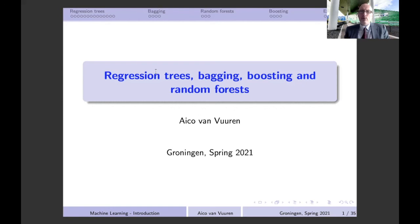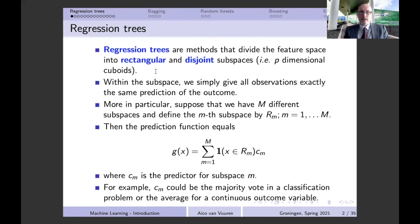These methods can make regression trees one of the most powerful prediction methods. Regression trees are methods that define the feature space — the total support of our features — into rectangular and disjoint subspaces, usually called p-dimensional cuboids. When p equals one, we divide the support of our single feature into disjoint intervals. When p equals two, we get rectangles; when p equals three, we get cubes.